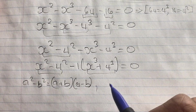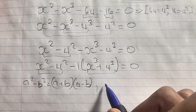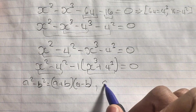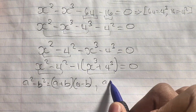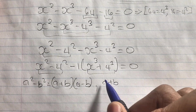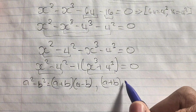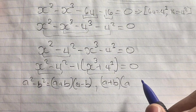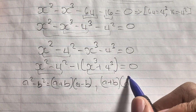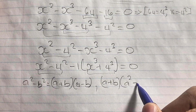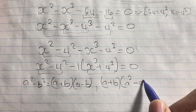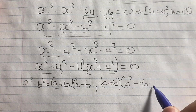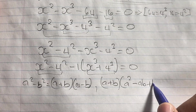We also have the sum of two cubes. The sum of two cubes can be expanded as: a cubed plus b cubed equals (a + b) times (a squared minus ab plus b squared).